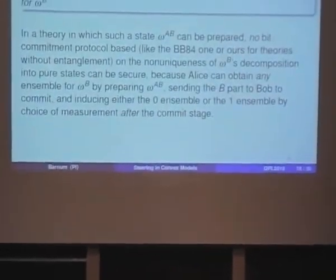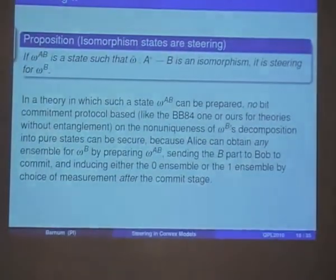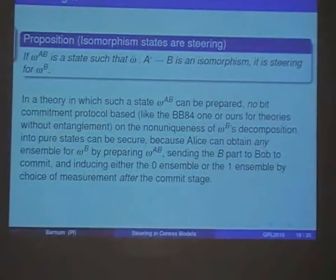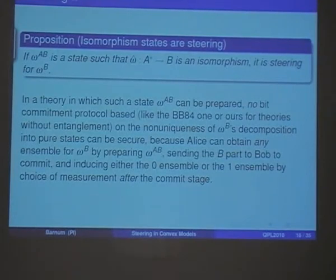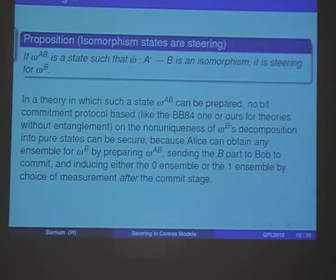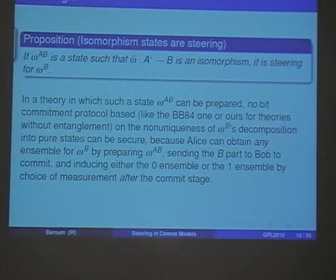Schrodinger found it weird that you can steer at all in quantum mechanics. In fact, quantum mechanics has the property that not just are there alternative ensembles you can steer to — in fact, any ensemble you can think of for a marginal state, you can find an entangled state that will steer to that marginal.